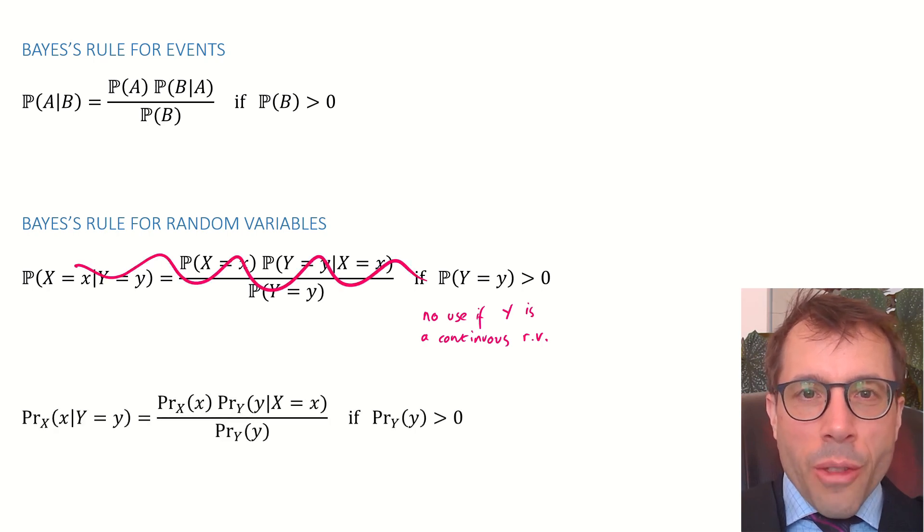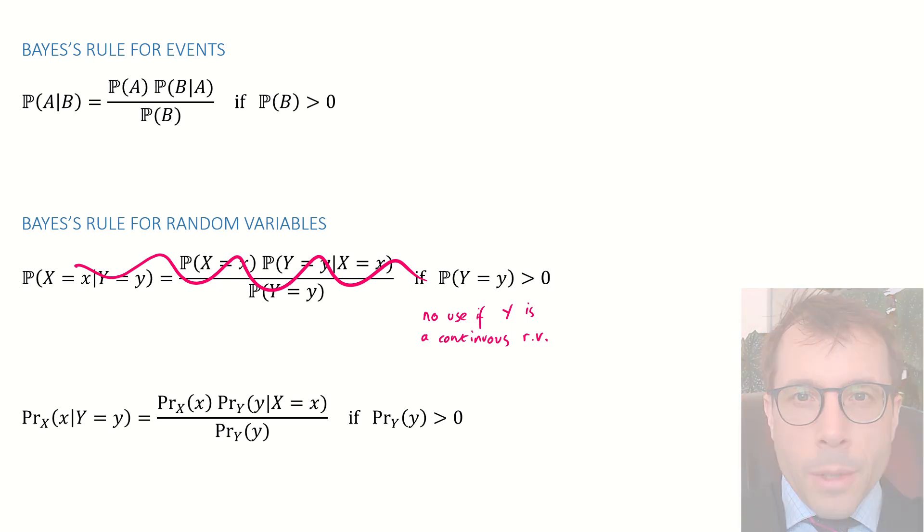It turns out, though, that there's another version of Bayes' rule that does work when y is a continuous random variable. We're going to come back to this in two weeks' time, and we'll go through this carefully. But for now, all you need to remember is this: for discrete random variables, likelihood is just another word for probability. And for continuous random variables, it's not a probability, but it does all the things we'd like a probability to do.